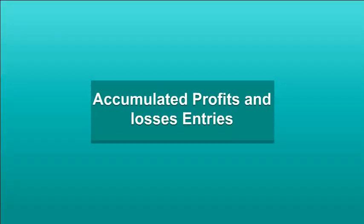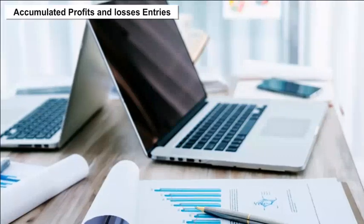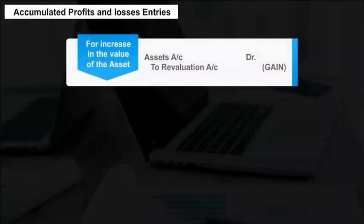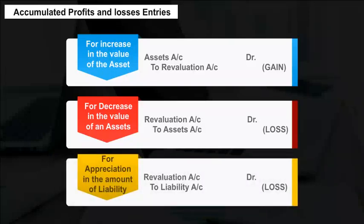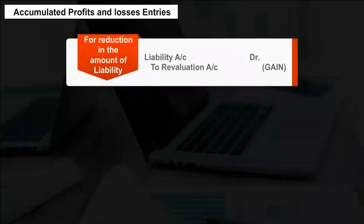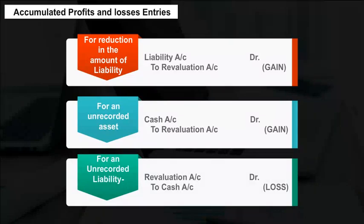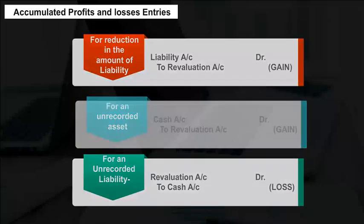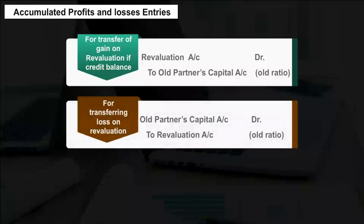Journal entries for revaluation of assets and liabilities: entries are made for increase in the value of an asset, decrease in the value of an asset, appreciation in the amount of a liability, reduction in the amount of a liability, an unrecorded asset, an unrecorded liability, transfer of gain on revaluation if credit balance, and for transferring loss on revaluation.